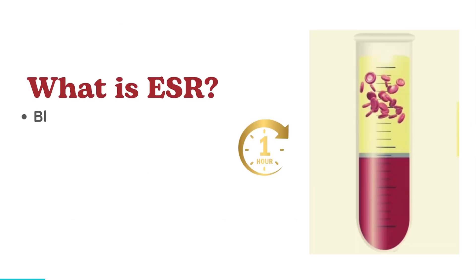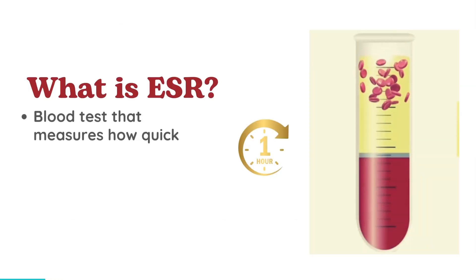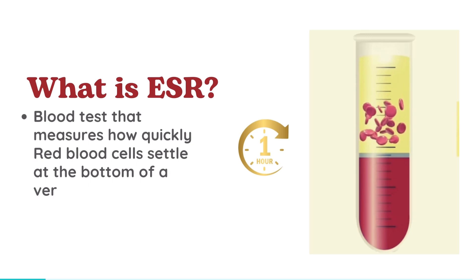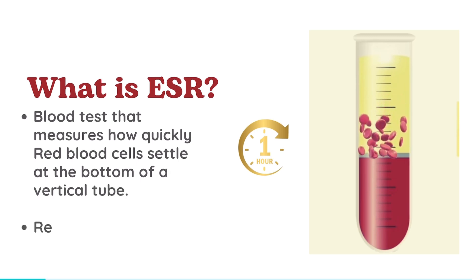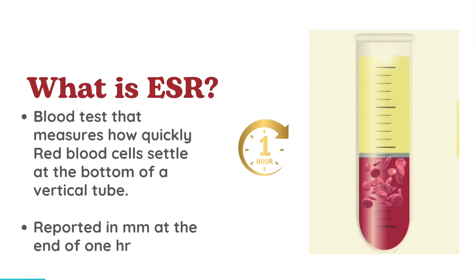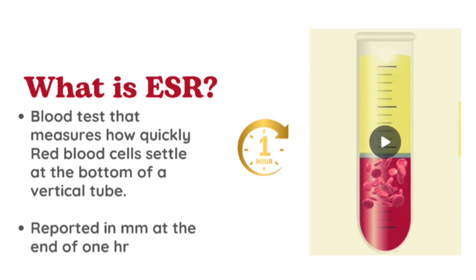What is ESR? Let's start with the basics. ESR, or erythrocyte sedimentation rate, measures how quickly red blood cells settle to the bottom of a vertical tube over one hour. After one hour, the height of the sedimented RBCs is measured in millimeters per hour. Importantly, ESR is an indirect measure of the body's acute phase response, giving us clues about inflammation.